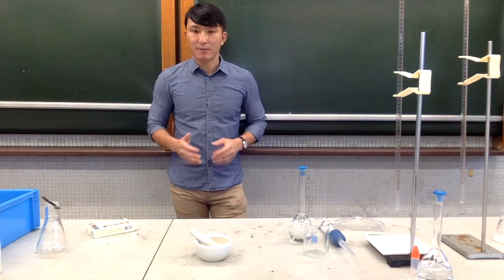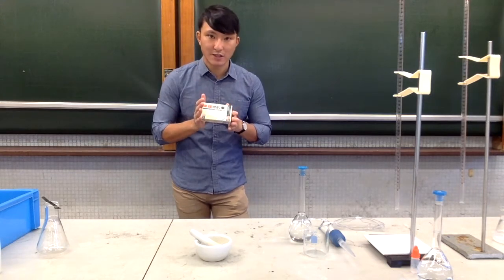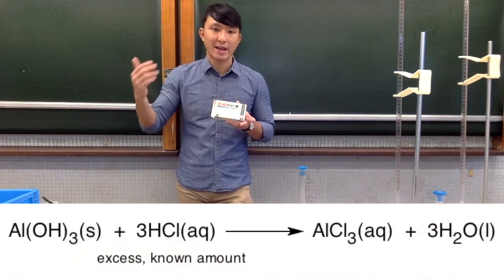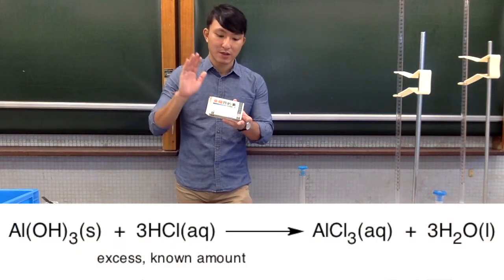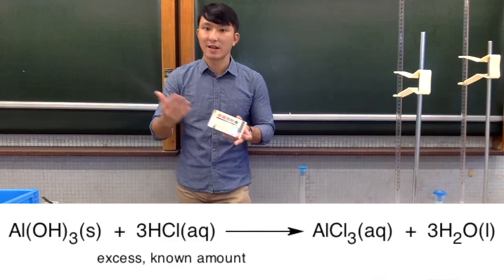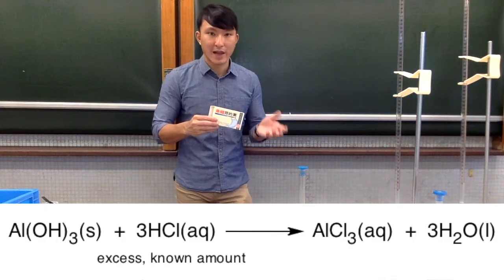Using this experiment as an example, we are trying to find out the mass of aluminum hydroxide in the antacid tablet. What we're going to do is add excess hydrochloric acid so that all the aluminum hydroxide will react with the hydrochloric acid. So some hydrochloric acid will be left unreacted.